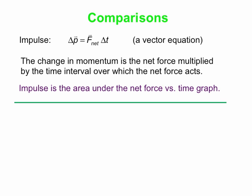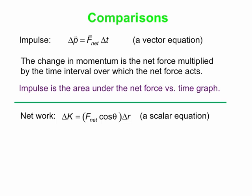So let's compare that to what we're going to do with work. We have something we call the net work. It's related to a change in some other quantity. K actually represents the kinetic energy — energy associated with motion. So change in kinetic energy is not quite the net force by itself, but it's a component of the net force. So it's F_net cosθ times some displacement delta R. This is an equation that relates scalars. Kinetic energy is a scalar, and the component of F_net multiplied by the displacement is also a scalar. That's an important difference between impulse and work right there.